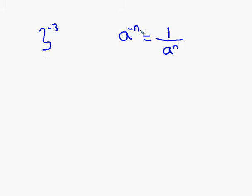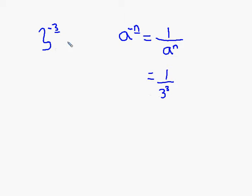So what you would have to do: your a is 3, and you write it as 1 over a to the n. For this general property to apply, your n value would have to be 3, so you'd be replacing n with 3. Basically, if you want to write 3 to the minus 3 without a negative exponent, write it as 3 to the 3 in the denominator, because for it to be mathematically equivalent, it needs to be in the denominator.